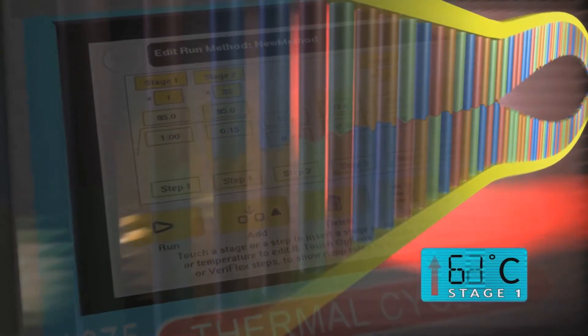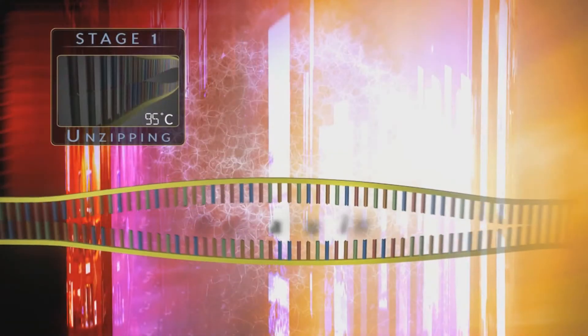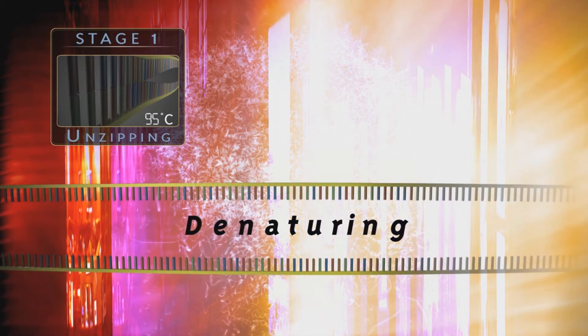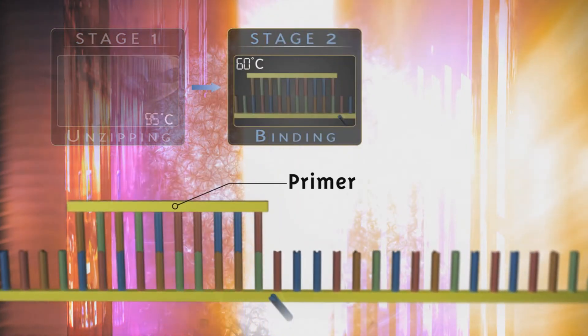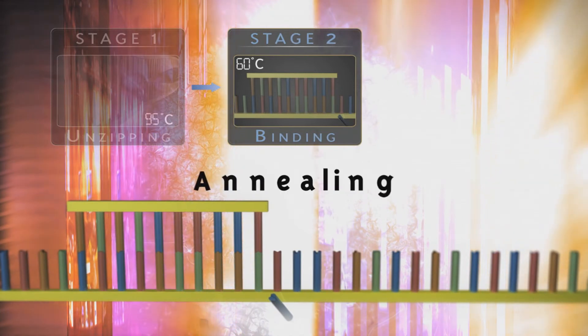The changing temperatures ignite a chain of events, beginning with the denaturing or unzipping of the double-stranded molecules. Next, the primers bind to the individual strands at precise locations, a process known as annealing.